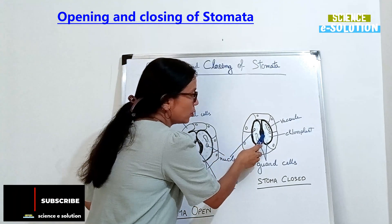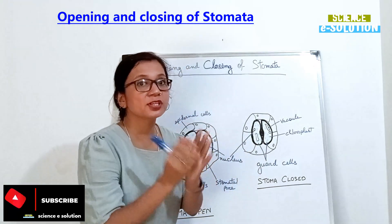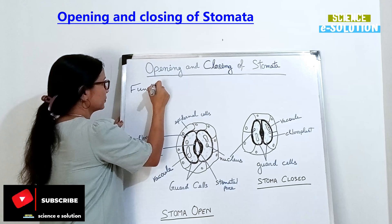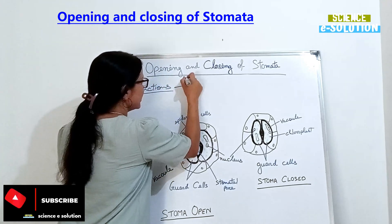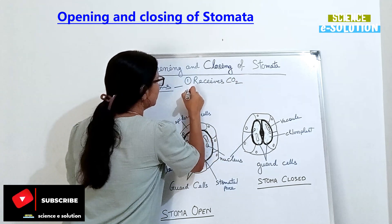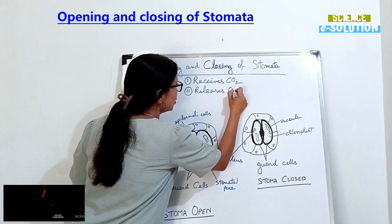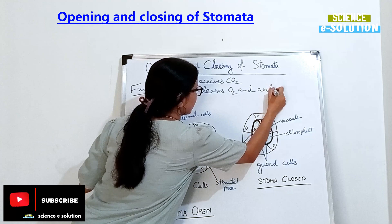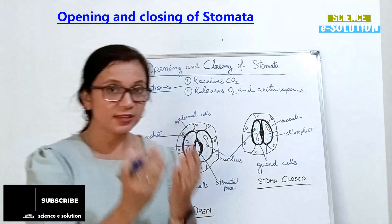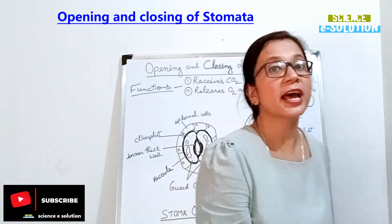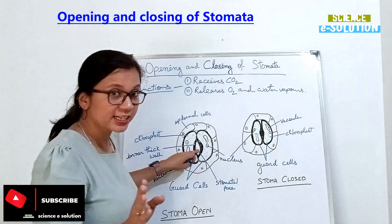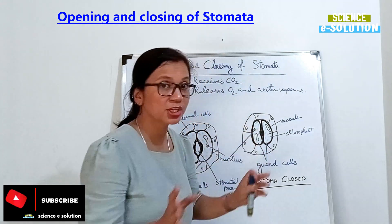The stomatal pores also close. Why do they close? They close to reduce the water loss by the plants. The functions of stomata are: number one, it receives carbon dioxide; and number two, it releases oxygen and water vapors. This exchange — receiving carbon dioxide and releasing oxygen and water vapor — is maximum during the daytime when the stomata are open, and at night time the stomata close to reduce water loss.